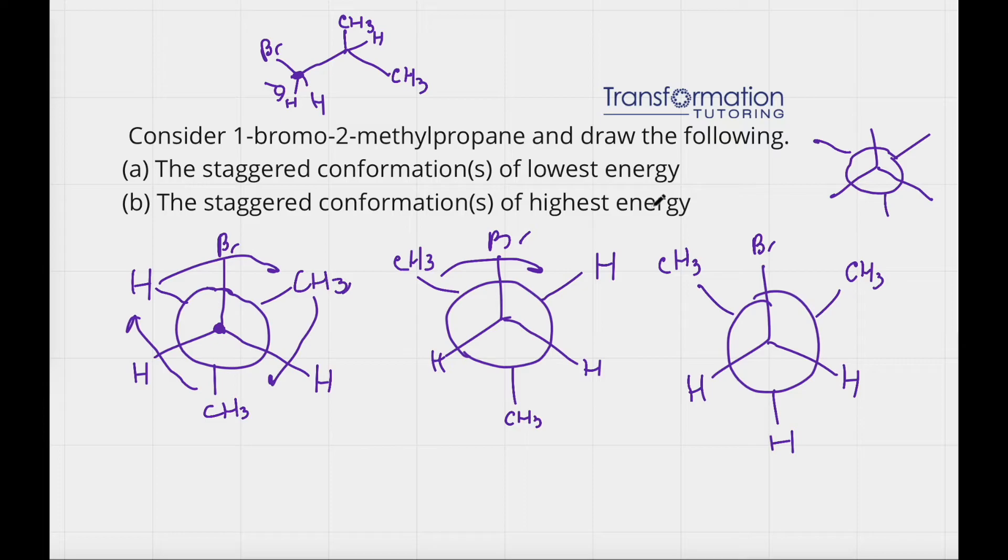Next, we have to determine what is the highest energy and what is lowest energy. When we have big groups next to one another, that is destabilizing because they're bumping into one another and that causes strain. So my highest energy will be the most unstable conformation, where I have most groups right next to one another.